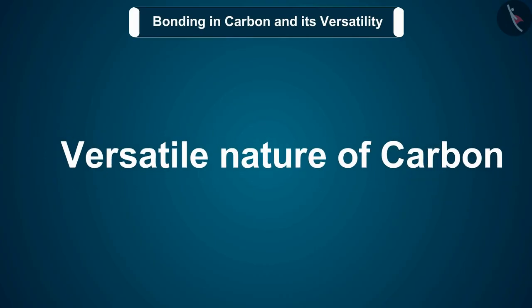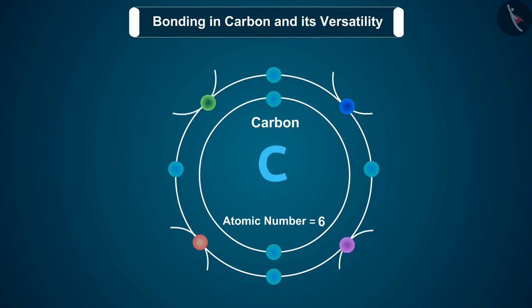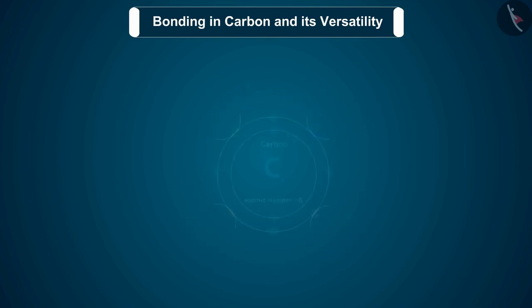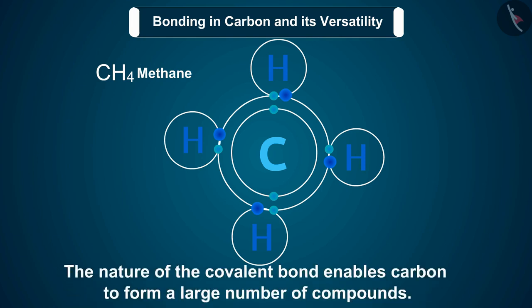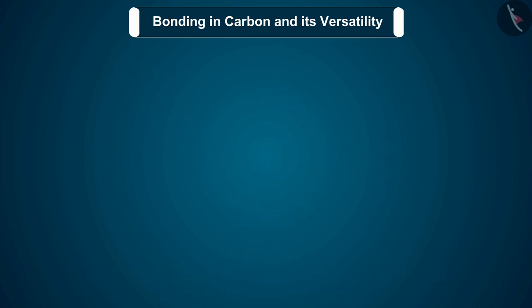Let us now discuss about the versatile nature of carbon. We have seen the formation of covalent bonds by the sharing of electrons in various elements and compounds. We also know the structure of a simple carbon compound methane. We also know about how many things we use contain carbon. In fact, we ourselves are made up of carbon compounds. The nature of the covalent bond enables carbon to form a large number of compounds.